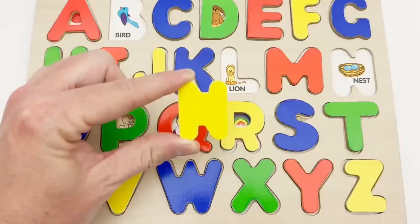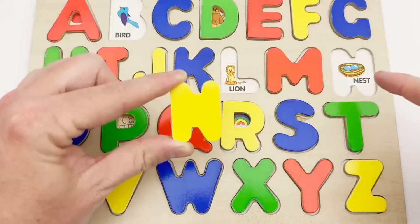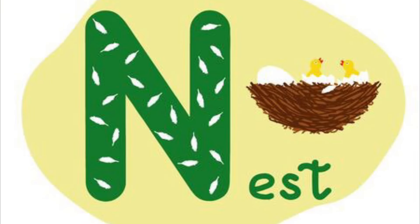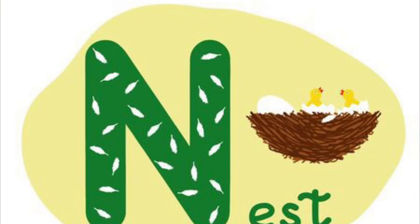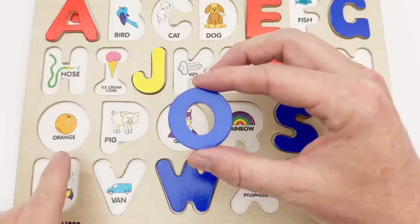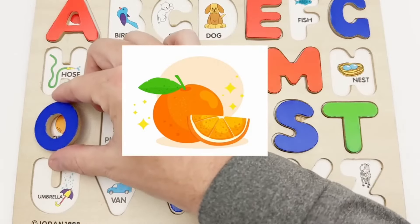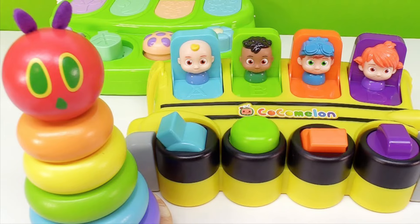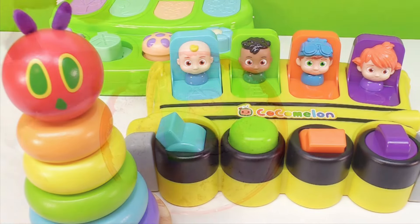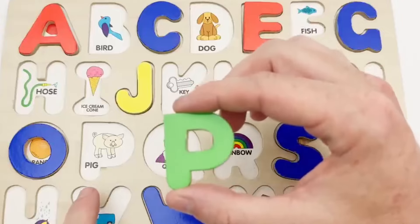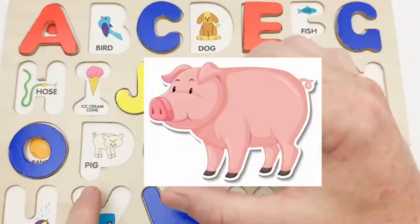The red L goes up here. It is for mittens. The green P goes right here next to the O. P is for pig.